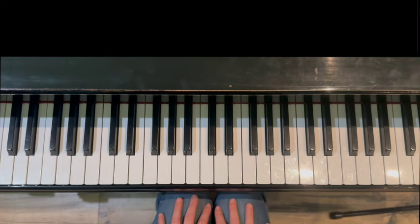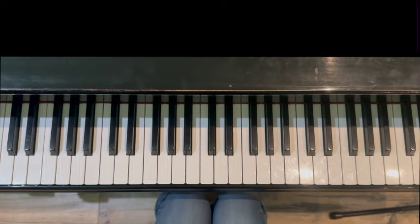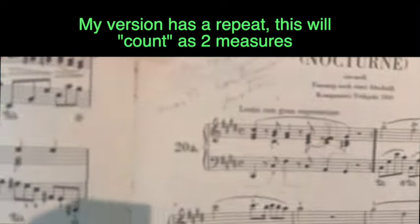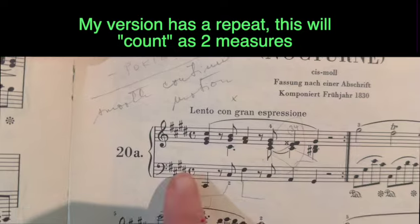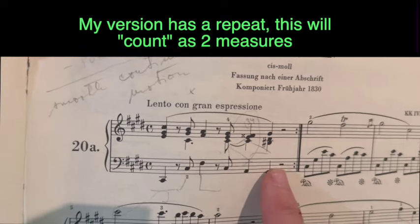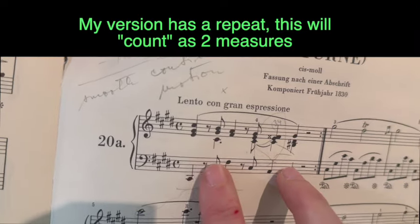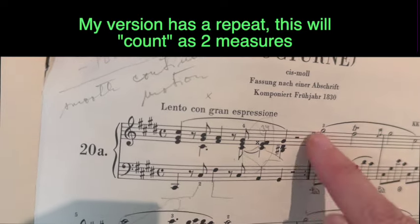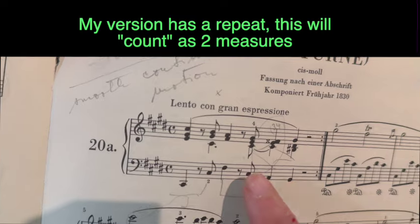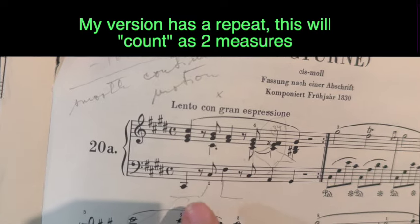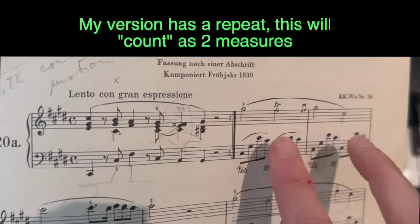We're going to just get started right away. There's something to point out. My measure one is written kind of as two measures. There's actually eight beats right here, so in some versions there might be a measure line right here. This is actually going to count as two measures, plus then there's a repeat. So just be mindful of that. This will basically be measures one and two, then we'll start tomorrow with three and four and so forth.